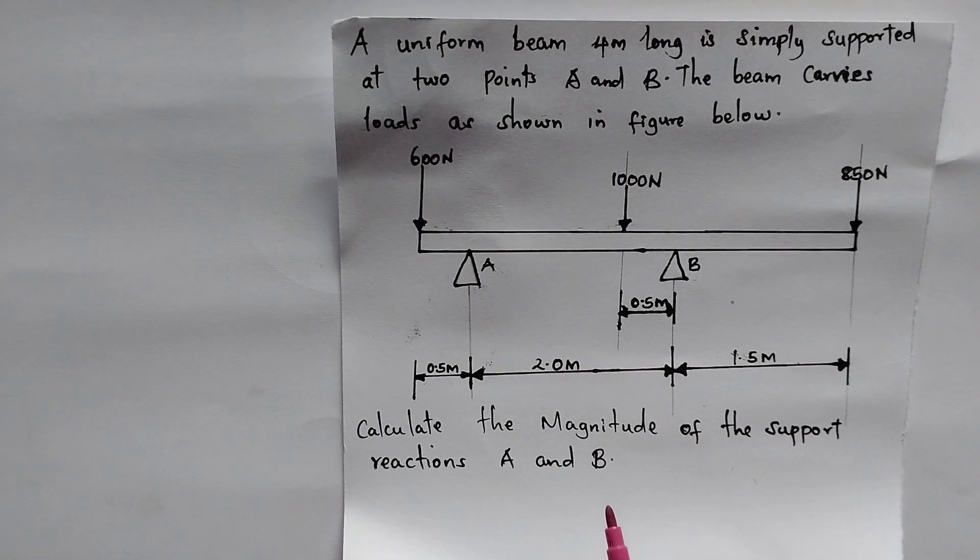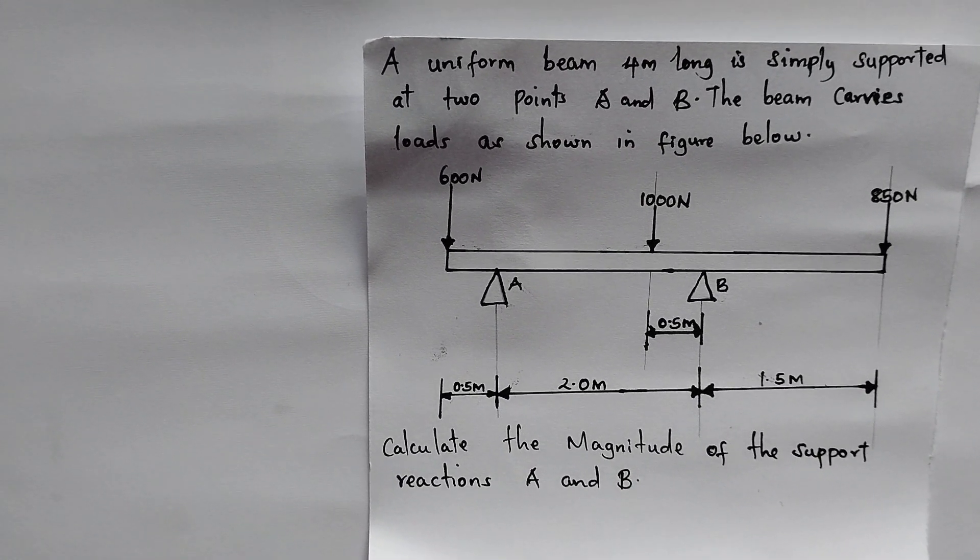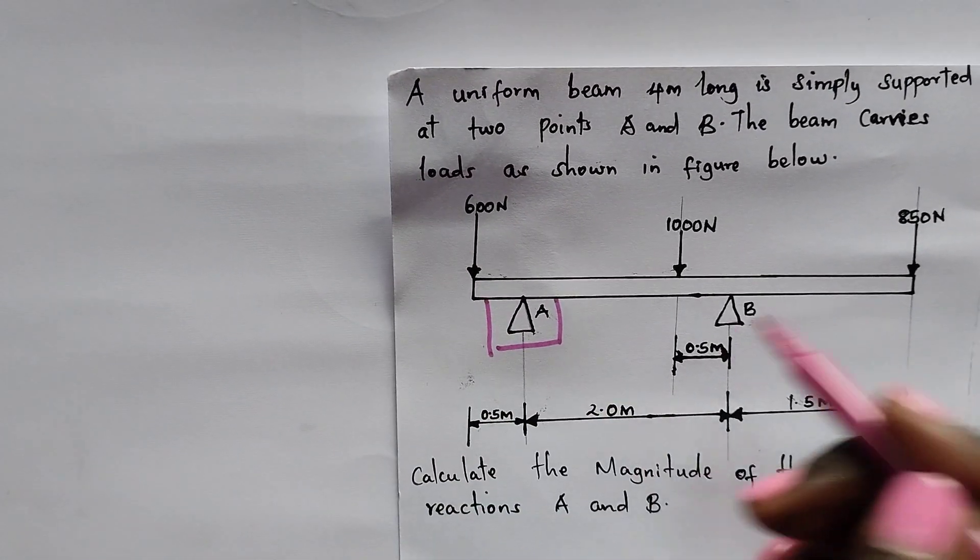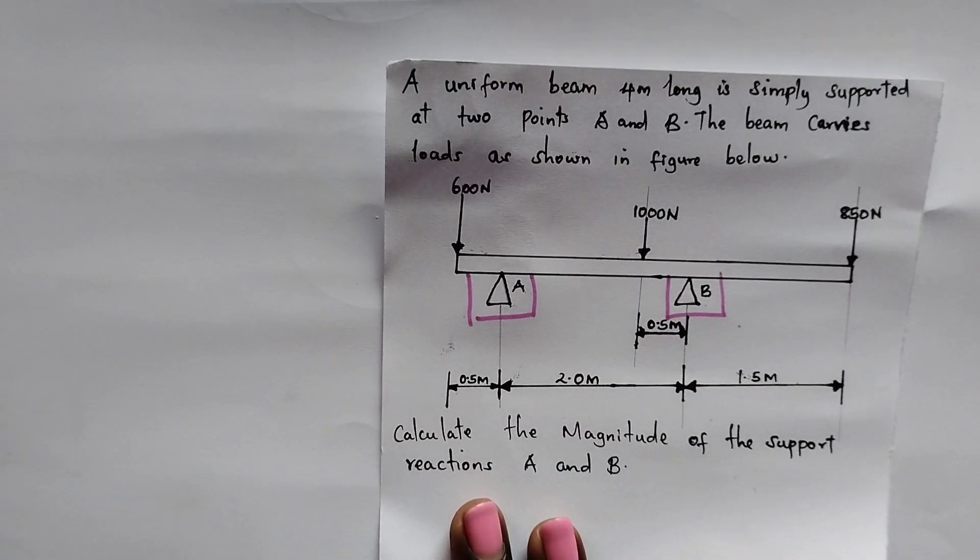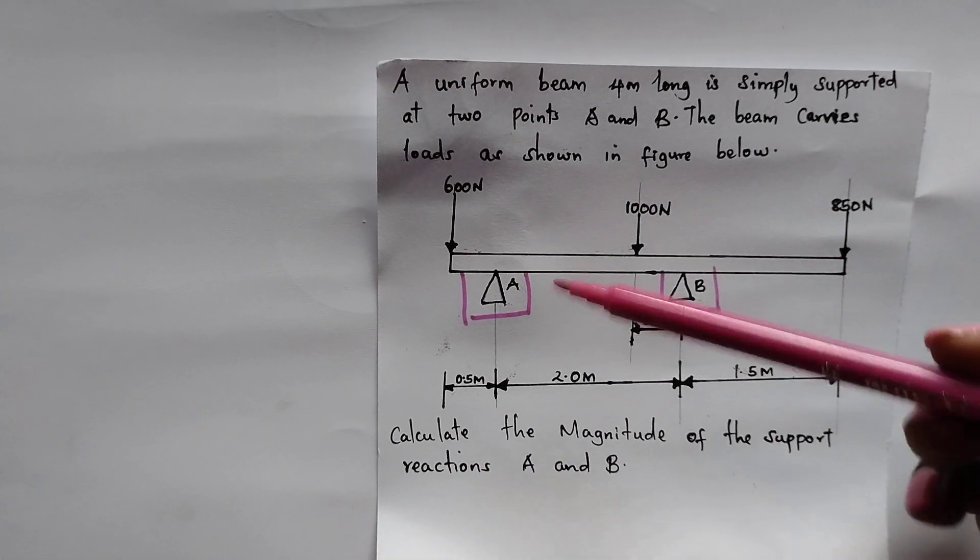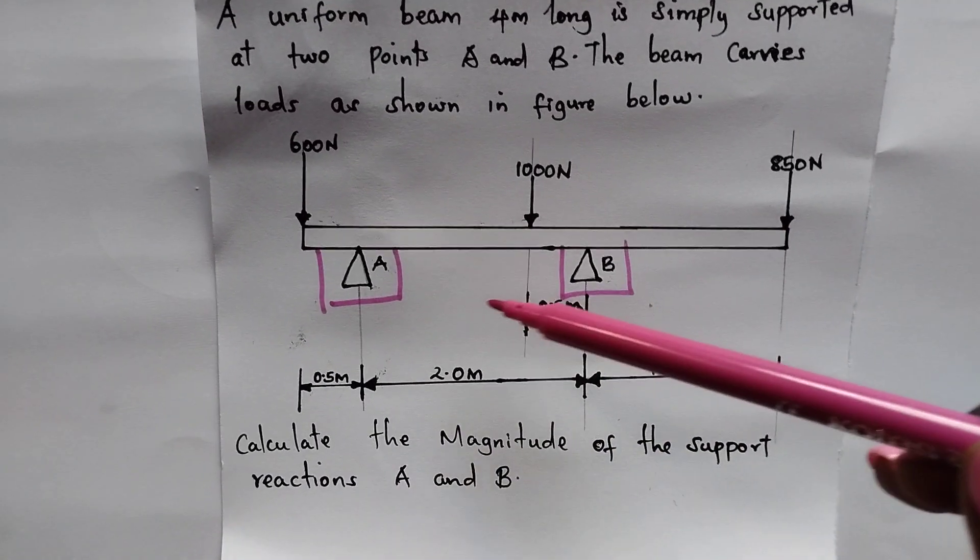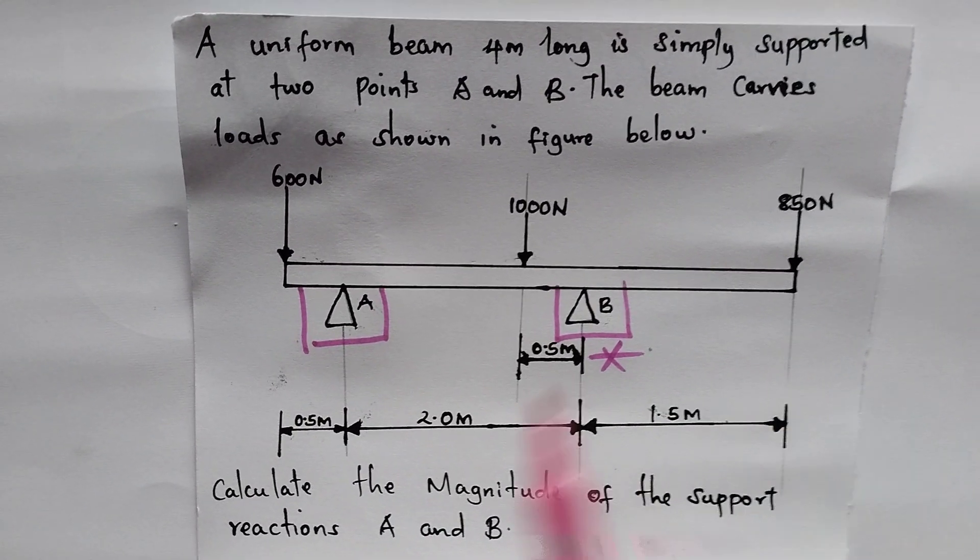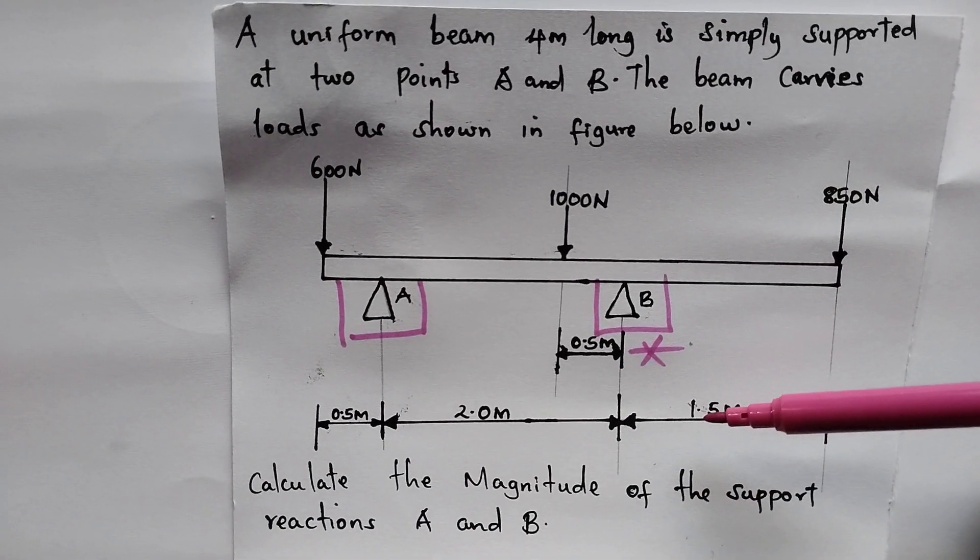We are asked to calculate the magnitude of the support reactions A and B. So this is what we are going to exactly find. Now, I want to make this very simple for us to understand. If you have two points of support and you want to get at least a single side, that tells us that if we happen to get the magnitude of B, we can easily get A because we can use the law that all upward moments should be equal with downward moments.